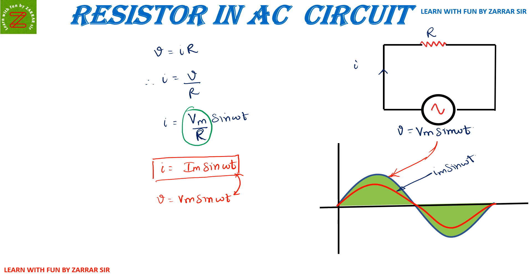Hence, there is no phase difference between voltage and current in the behavior of a resistor. However, as we move towards inductors and capacitors, you will find that there is a phase difference in both cases.